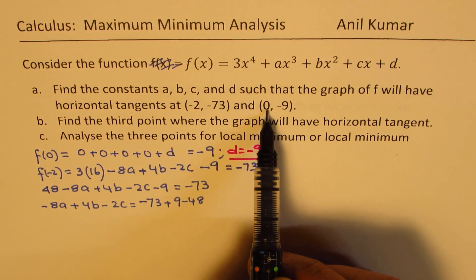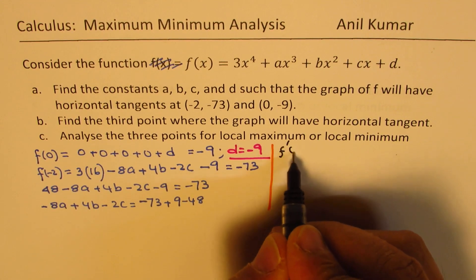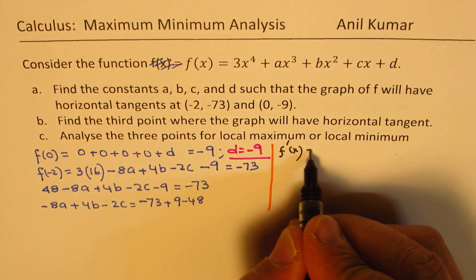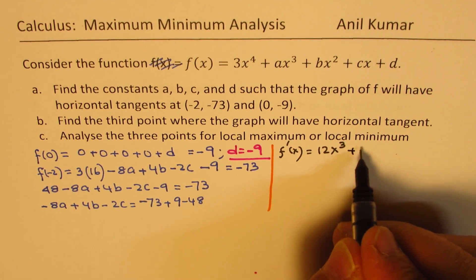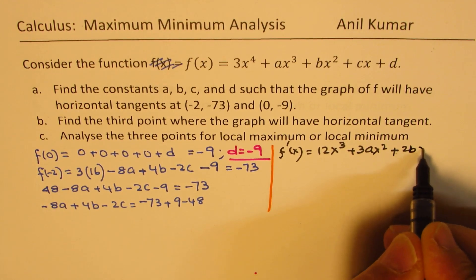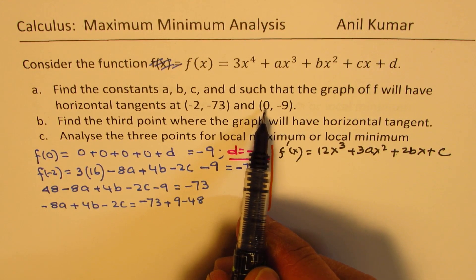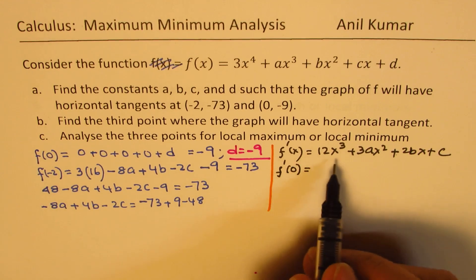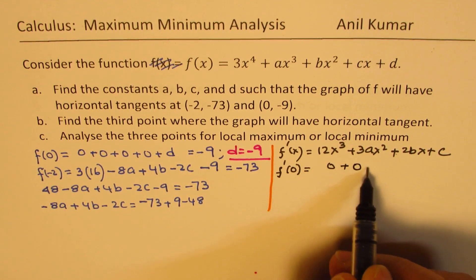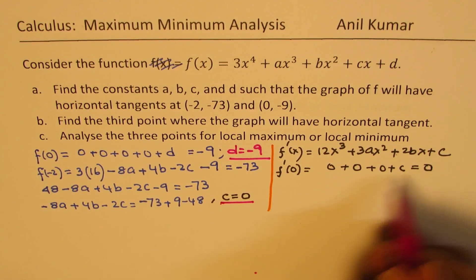Now let's work with the derivatives. Since we have a horizontal tangent at x = 0, f'(0) = 0. The derivative of the function is f'(x) = 12x³ + 3ax² + 2bx + c. Substituting x = 0 gives 0 + 0 + 0 + c = 0. Therefore c = 0.